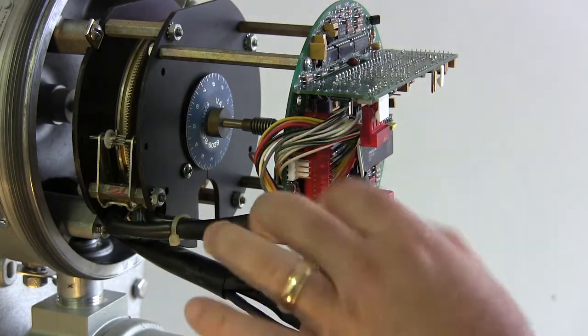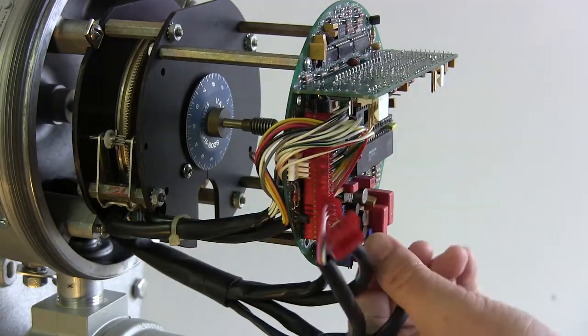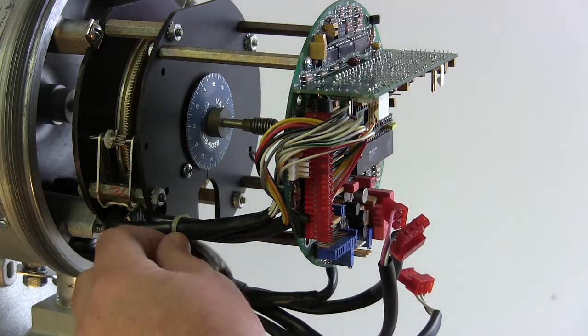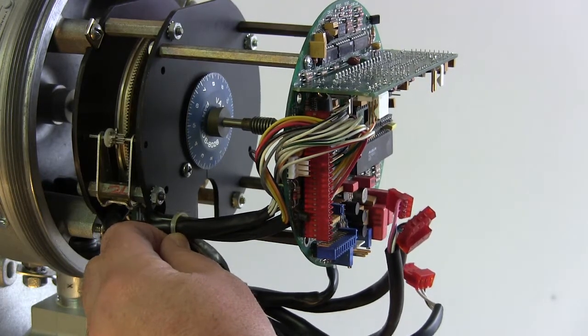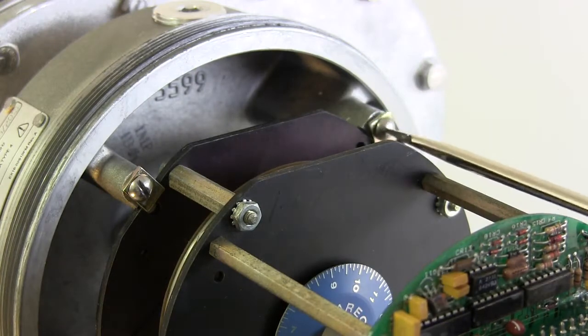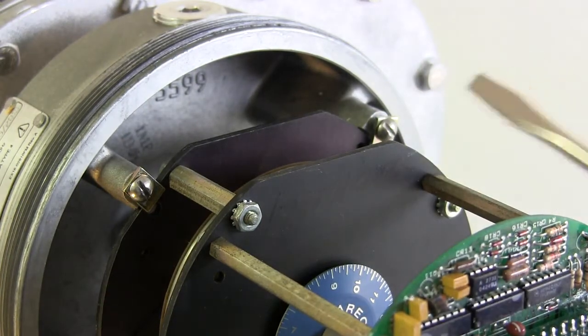Just disconnect the wire connectors and cut any cables that may be holding the wiring bundles in place. Now remove the four screws holding the encoder in place.